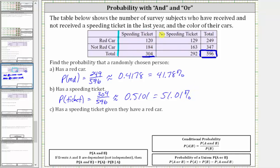And then for part C, we want to find the probability that a randomly chosen person has a speeding ticket given they have a red car. So because it's given they have a red car, we are only considering those that have a red car, which we know are in this row. 249 people have a red car.